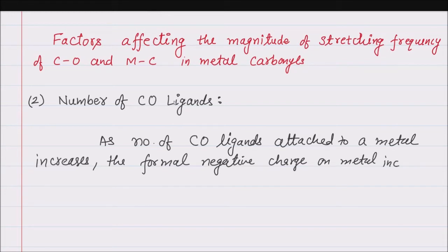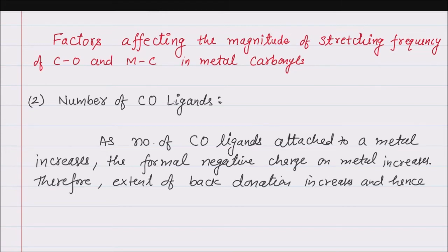So as formal negative charge on metal increases, its tendency or extent of back donation increases. So the extent of back donation increases. As extent of back donation increases, you know back donation is to the pi star orbital of CO and hence CO stretching frequency decreases. CO stretching frequency will decrease and metal carbon bond is becoming stronger.